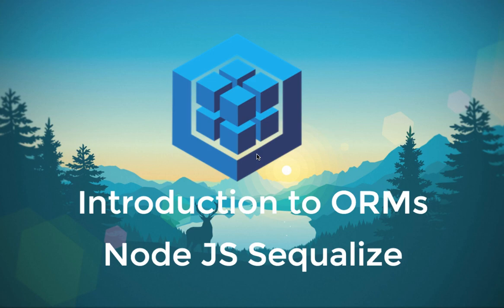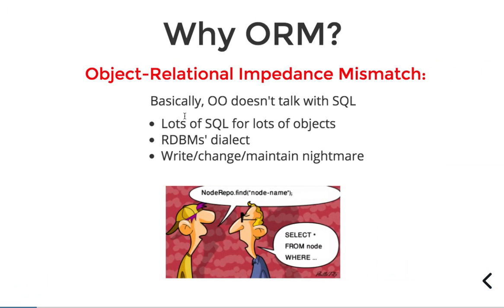Let's talk about what ORM is. ORM stands for Object Relational Mapper, which provides the mapping of your SQL tables into schema models in Node.js code. In terms of object-oriented concepts, whatever you have in the tables — the fields, attributes, and tables themselves — are represented as a model, and those table columns are represented as fields or variables inside that model.